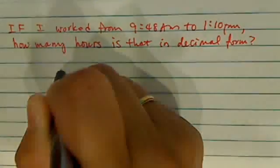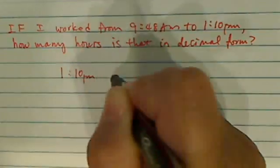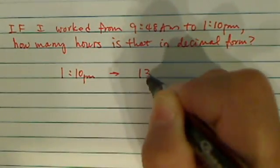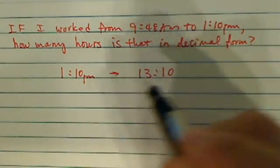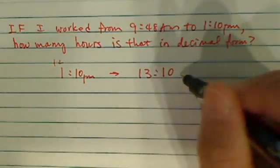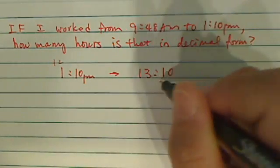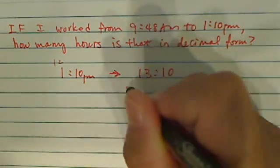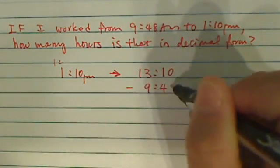So the best way to do it is this: 1:10 p.m. is 13 hours, 13 hours and 10 minutes. How you do this is you basically add 12. This is how I get 10 to 12 in the 24 hour format, and I'm going to subtract 9:48.